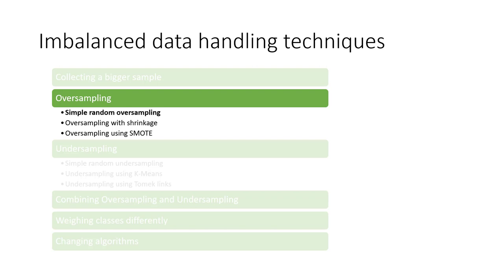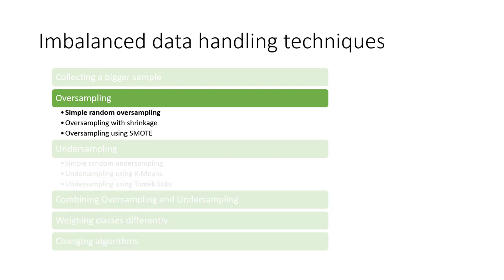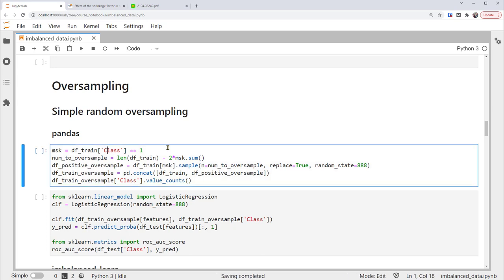Let's apply simple random oversampling. We'll use two ways in Python: the pandas library, which is more transparent, and the imbalanced-learn library, which requires less code. In the pandas approach, MSK stores Boolean values of whether each record in the training set has class 1. Then we calculate the number of extra copies of the minority class needed — num_to_oversample — which equals the total training observations minus two times the number of class 1 observations.